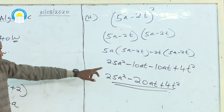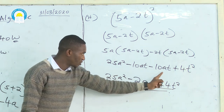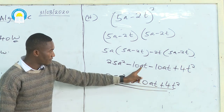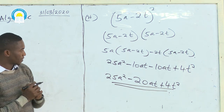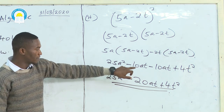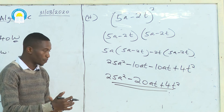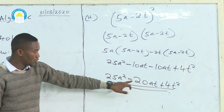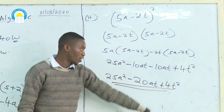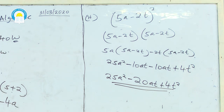Checking like terms: 25A squared appears once. The AT terms — minus 10AT and minus 10AT are like terms: minus means debt, so two debts of 10 give minus 20AT. Then plus 4T squared. So our final answer is 25A squared minus 20AT plus 4T squared.